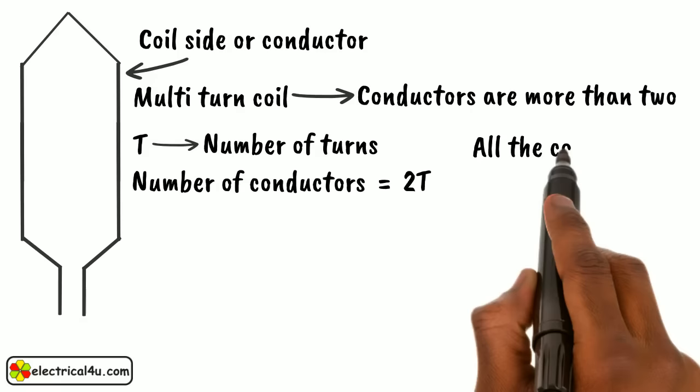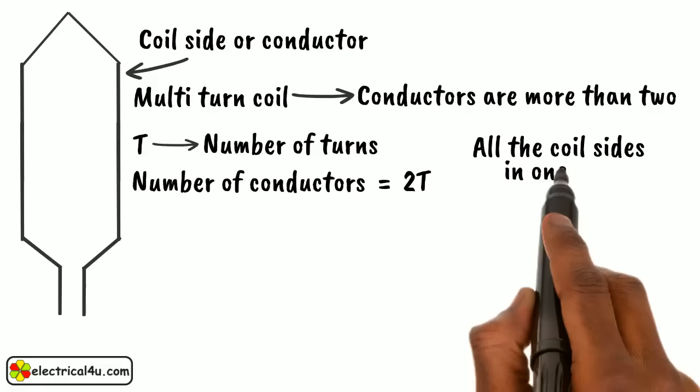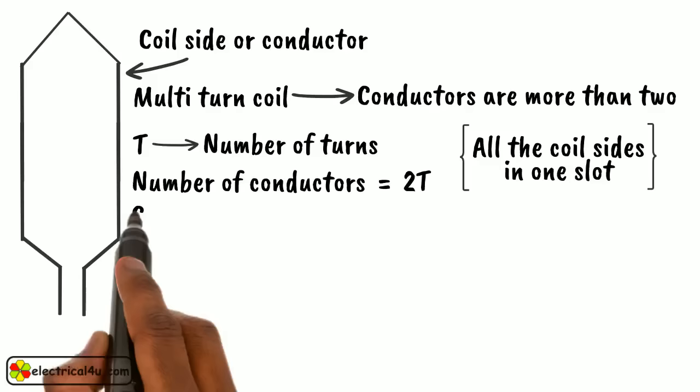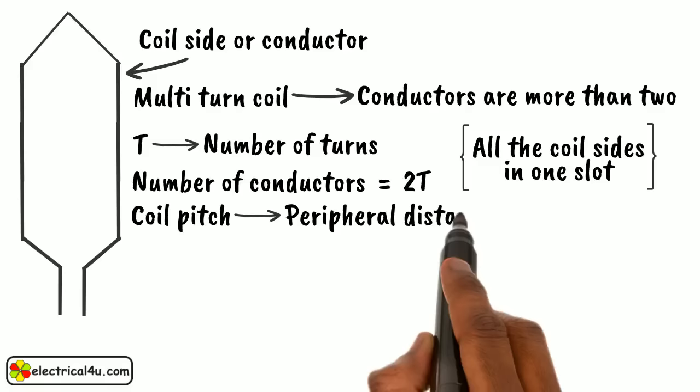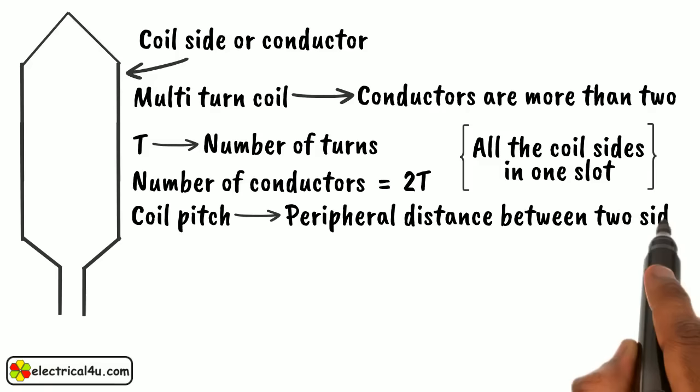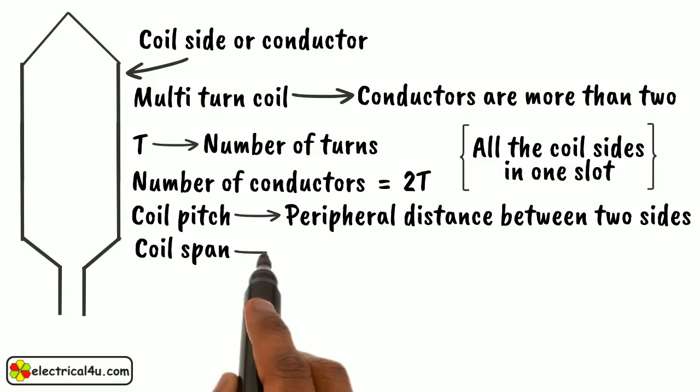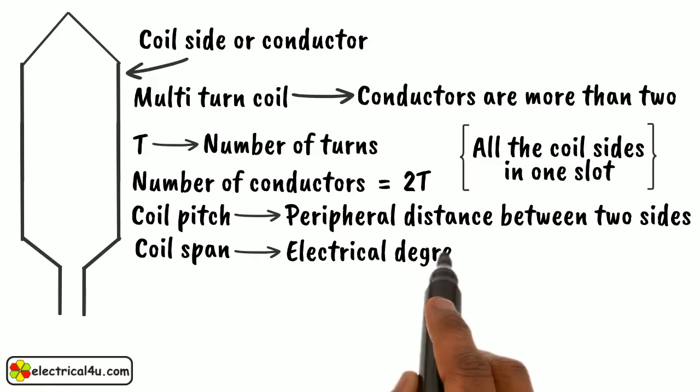All the coil sides of a coil must be placed in one slot only. Coil pitch or coil span is defined as the peripheral distance between two sides of a coil. Coil span is measured in terms of electrical degrees or number of armature slots.